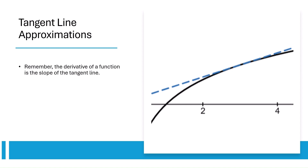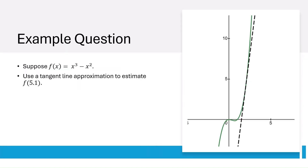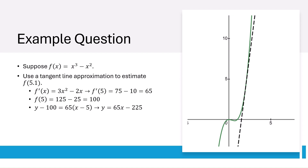Tangent line approximations are useful for estimating a function's values near a specific point. We use the fact that the derivative of a function is the slope of the tangent line, and then apply point-slope formula to approximate the function. For example, say we have f of x equals x cubed minus x squared. We can try to approximate f of 5.1 without actually plugging 5.1 into the function. First, we find the derivative at x equals 5, which turns out to be 100. Then we use point-slope formula and solve for y, which turns out to be 106.5. Comparing this to the actual value of 106.6, we see that the tangent line approximation is pretty accurate.